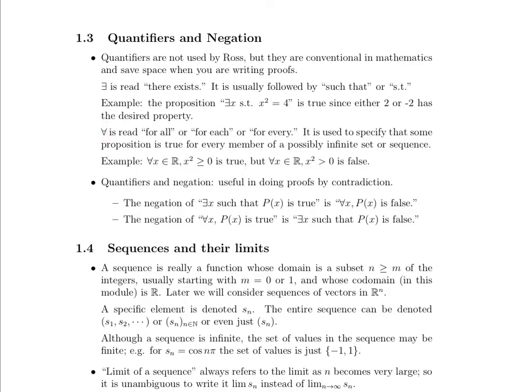This upside down A is read for all or for each or for every, whichever you prefer when you're reading over the sentence. It should make grammatical or contextual sense to you. It's used to specify that some proposition is true for every single member of a possibly infinite set or sequence, which we'll get into what a sequence is.